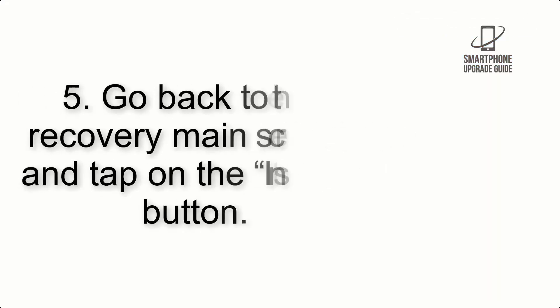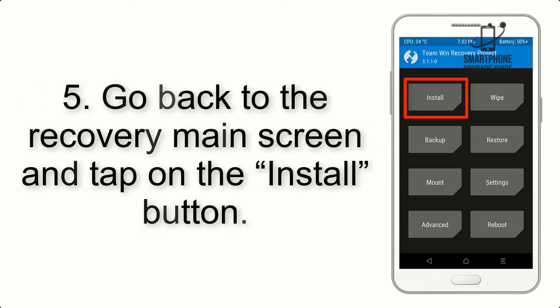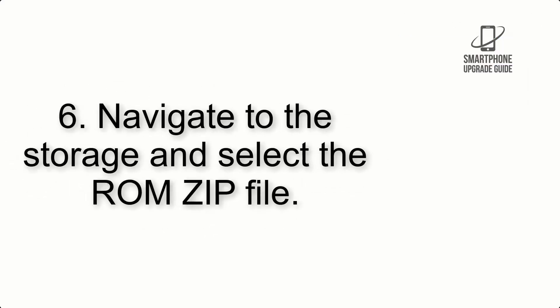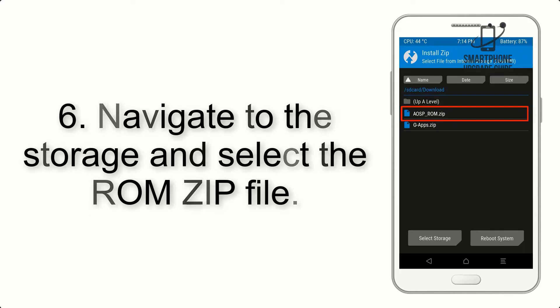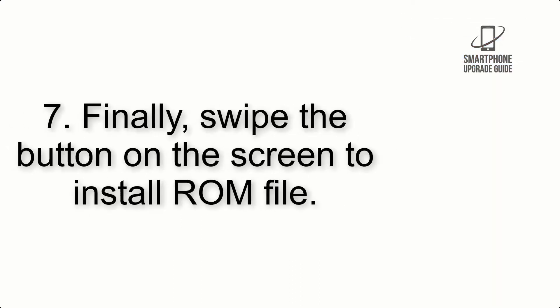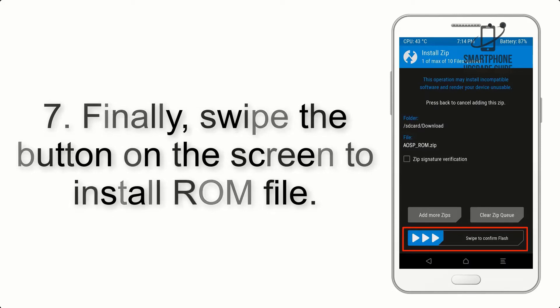Step 5: Go back to the recovery main screen and tap on the Install button. Step 6: Navigate to the storage and select the ROM zip file. Step 7: Finally, swipe the button on the screen to install the ROM file.